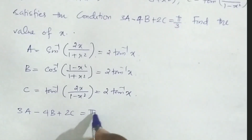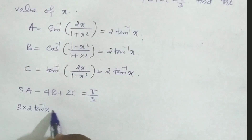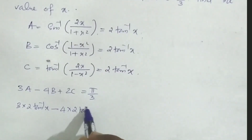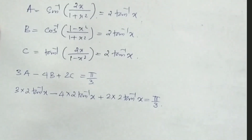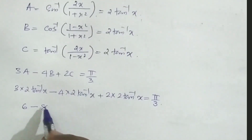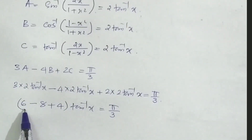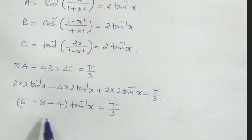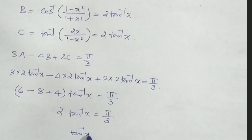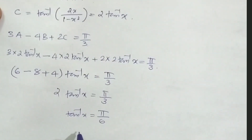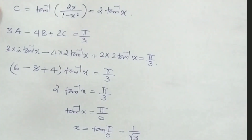Substituting into 3a minus 4b plus 2c equals pi/3: that is 3(2 tan inverse x) minus 4(2 tan inverse x) plus 2(2 tan inverse x) equals pi/3. Simplifying: (6 minus 8 plus 4) tan inverse x equals pi/3, so 2 tan inverse x equals pi/3, giving tan inverse x equals pi/6. Therefore x equals tan(pi/6) equals 1/root 3.